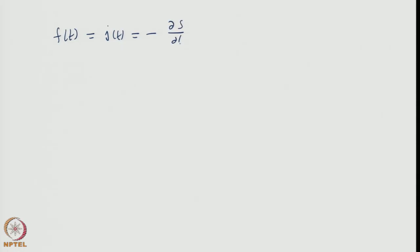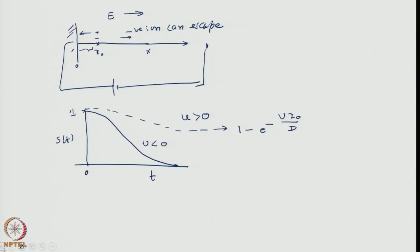From the survival probability, we can estimate the first contact time, or the first passage time, or the current — these three are equivalent as seen in the last lecture. We call that first contact time distribution f(t), which equals the probability current j(t), defined as minus dS/dt. We evaluate minus dS/dt by differentiating the expression derived in the previous slide.